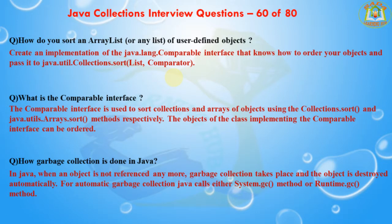The next question is: how do you sort an ArrayList of user-defined objects? Create an implementation of the java.lang.Comparable interface that knows how to order your objects, and pass it to java.util.Collections.sort(list, comparator). You can sort user-defined objects by implementing the Comparable interface, or you can use the Collections.sort method which takes a list of values and a Comparator object.